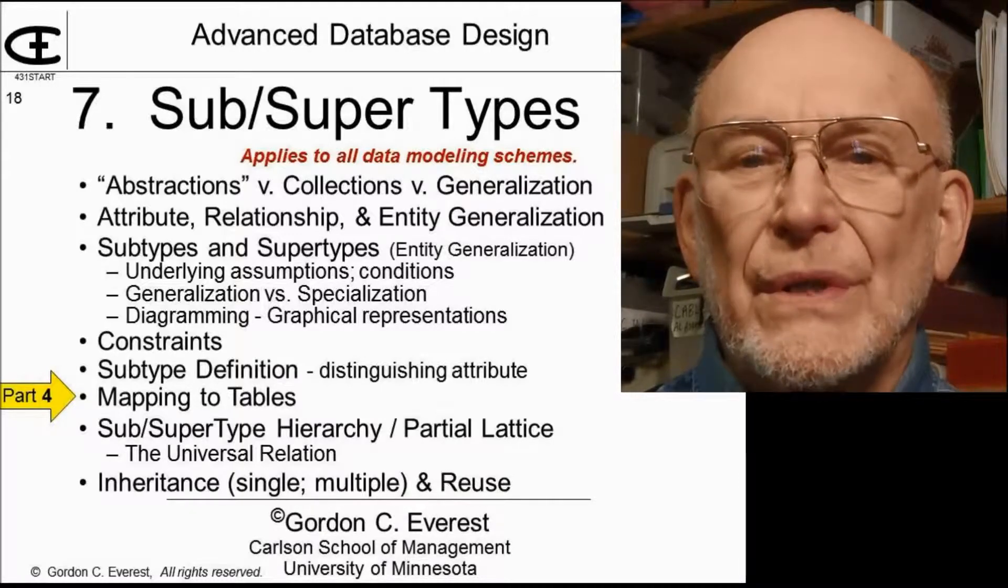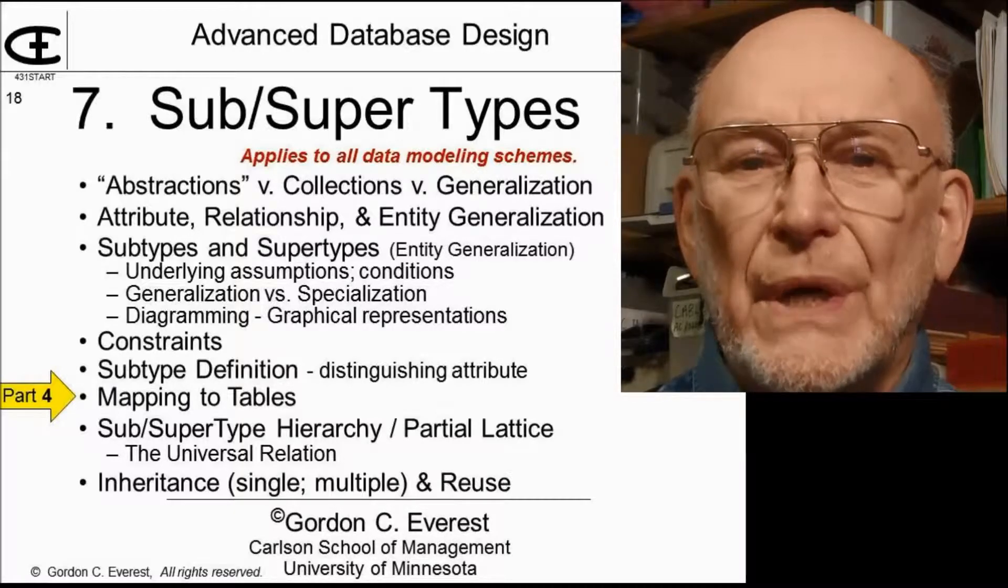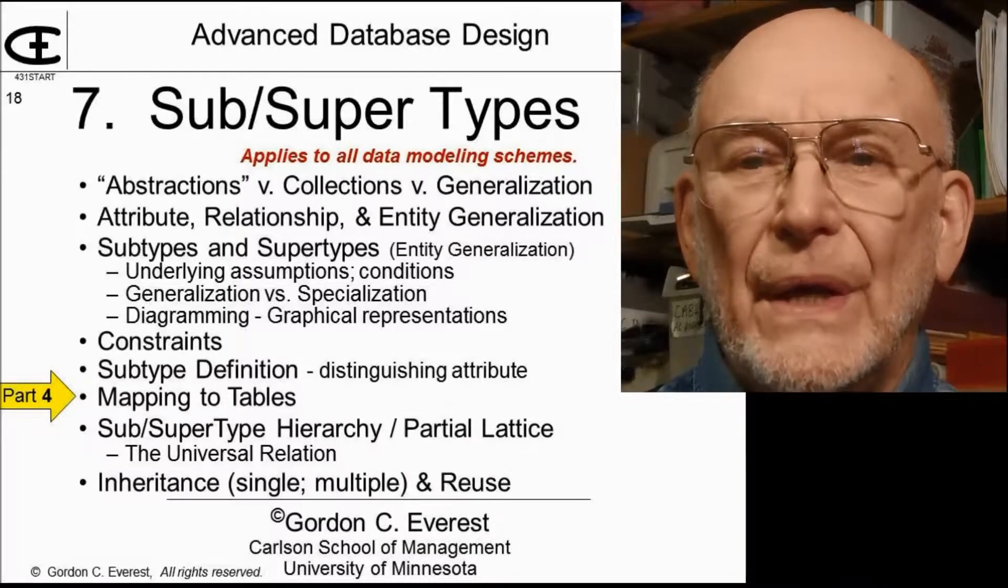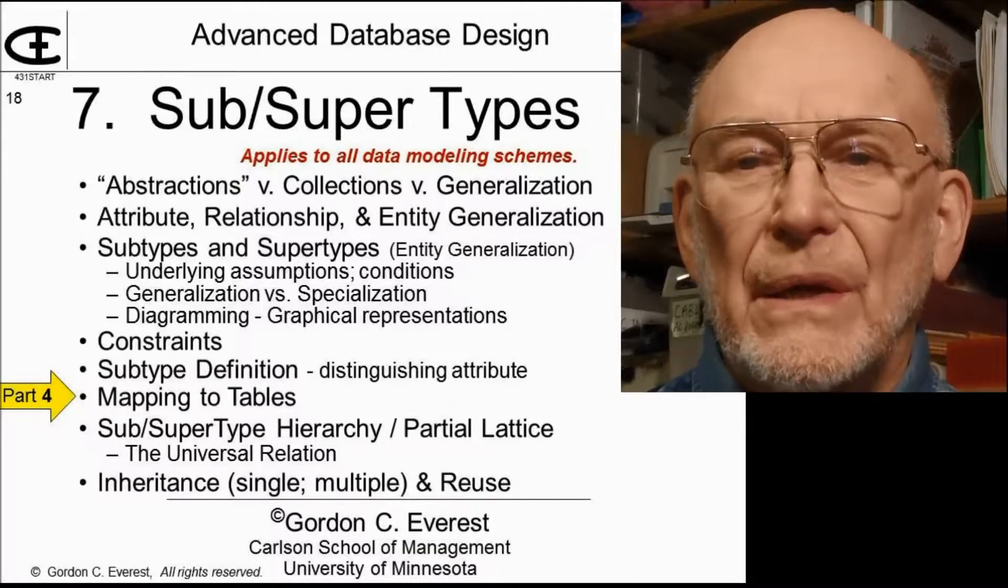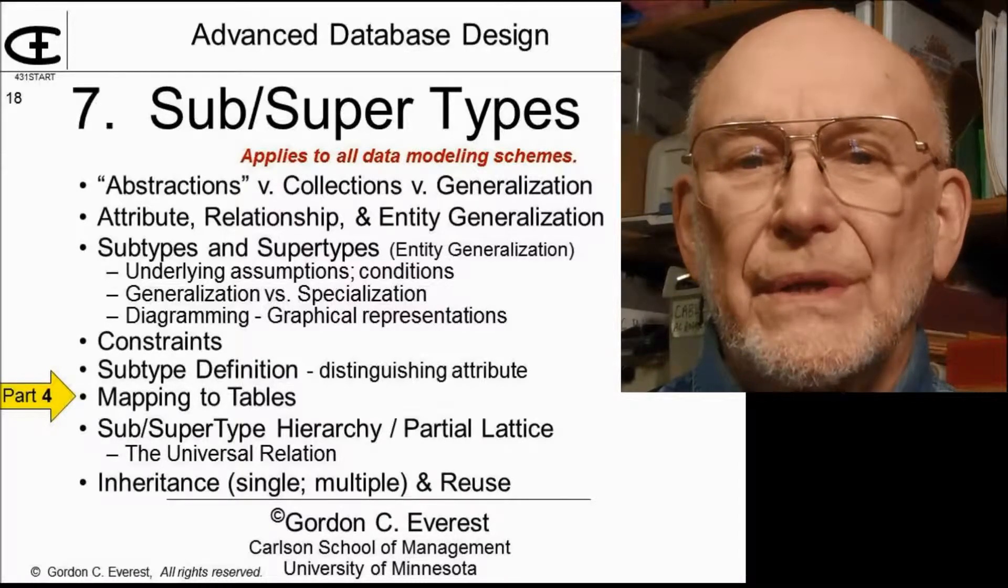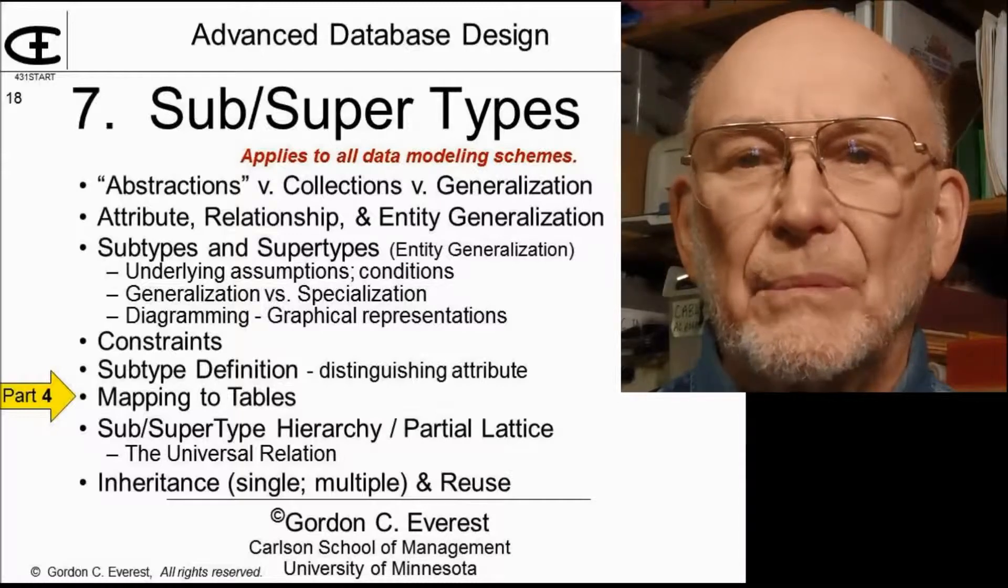There are three basic choices. You can build the tables for the supertypes, for the subtypes, or both, and then those can be in any combination. Notice that this allows the designer to defer where to build the tables until after the model is complete.